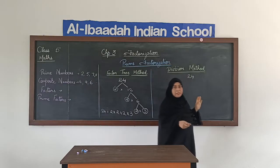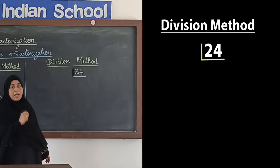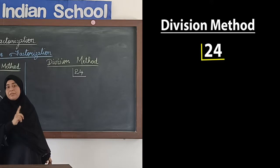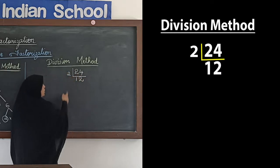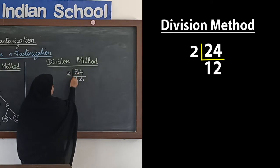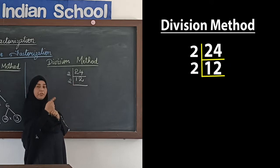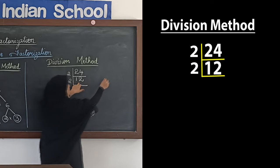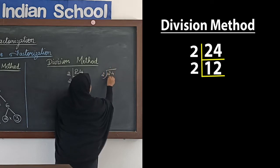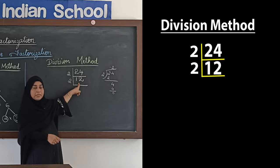Now we will do the same number with the division method. The division method starts from the smallest prime number that will divide 24. Since we are doing prime factorization, only prime numbers are used to divide. So first I will divide 24 with 2 — 2 into 12 is 24. This division is slightly different from the long division method: we write the answer below. I have divided 24 with 2 and the answer 12 is written below. Again we divide 12 with 2 — 2 sixes are 12 — and write the answer below.